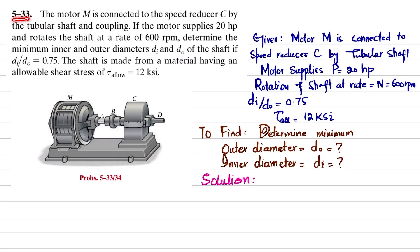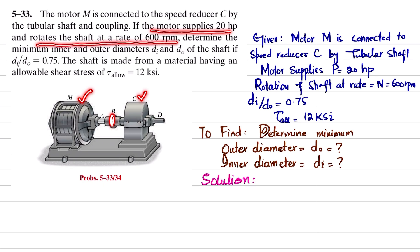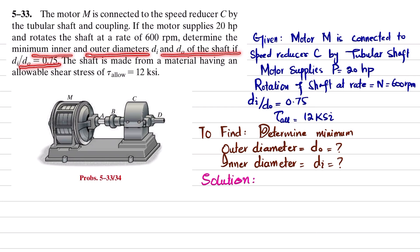Welcome back, problem 5-33. The motor M is connected to speed reducer C by a tubular shaft and coupling. The motor supplies 200 horsepower and rotates the shaft at 600 revolutions per minute. You have to determine the minimum inner and outer diameters of the shaft, given that di over d-naught is 0.75.